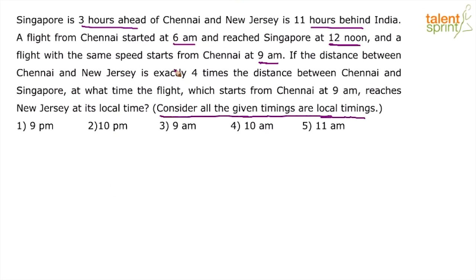You have to go in the anticlockwise direction. 6 am minus 11 hours: 6 am minus 12 hours is 6 pm, so minus 11 hours will be 7 pm. Are you able to follow the concept of ahead and behind?